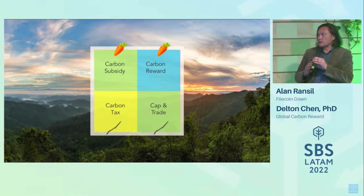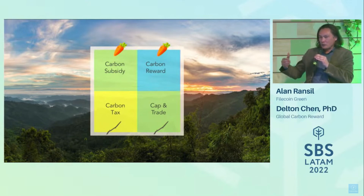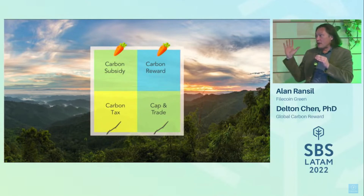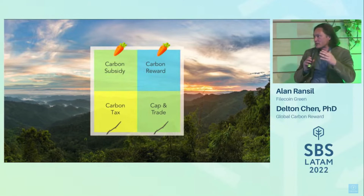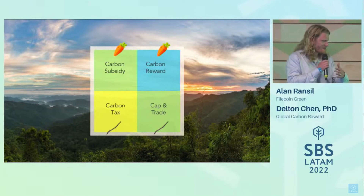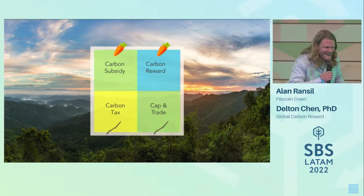If any central bankers are watching: the global carbon reward doesn't really require much work from you. All you've got to do is trade the currency on a computer. It's people like everyone here who are going to do all the work — the assessments, the MRV, the work on the ground, the financial planning, and everything else. That's where the real work is. And the Ministry for the Future — the carbon exchange authority — they're going to do the work. Central banks get an easy ride.